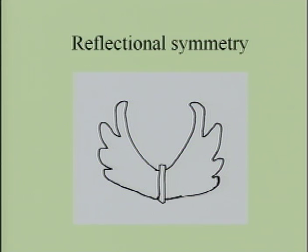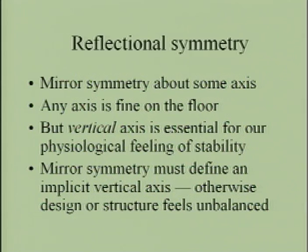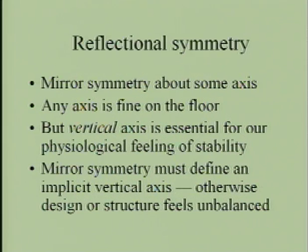Here is the reflection of symmetry — mirror reflection about an axis. I show this simple diagram because I'm going to talk about axes that are not explicit later. For reflectional symmetry, the axis is fine in any direction on the floor — in the X and Y dimensions. However, a vertical axis is not a cultural choice. Mirror symmetry must define a true vertical axis; otherwise the design feels unbalanced, with immediate consequences for contemporary architecture.